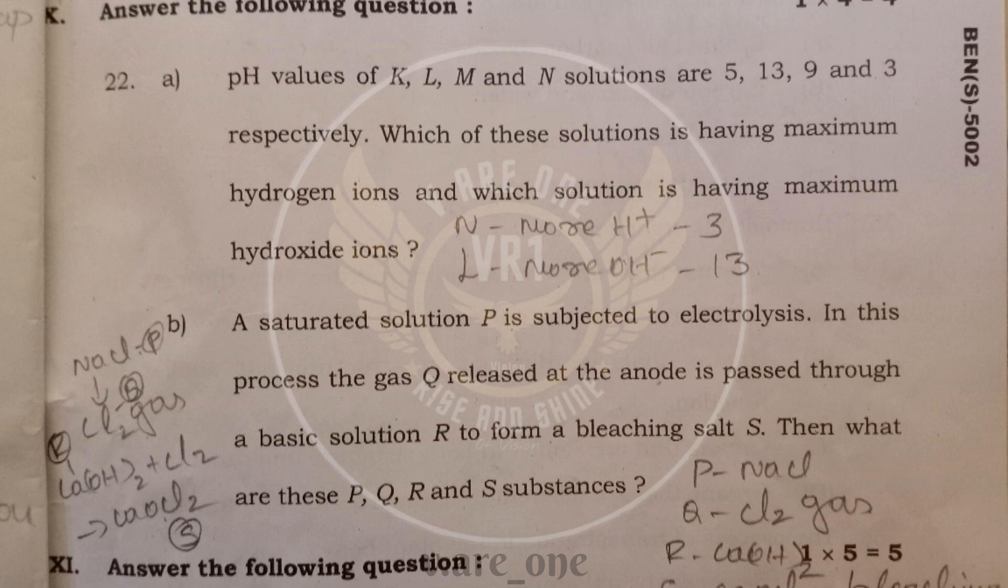And B question, a saturated solution P is NaCl, sodium chloride. And in this process, gas Q is chlorine gas. And R is calcium hydroxide. Because chlorine gas when it is passed through the calcium hydroxide, will get the calcium oxychloride. Means bleaching powder. And that is S. So, P NaCl, Q chlorine gas, R calcium hydroxide. And S is calcium oxychloride, bleaching powder.